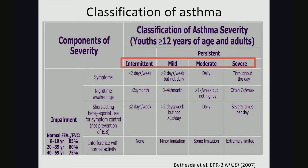Looking at the classifications of asthma, classification is mainly based on the frequency of asthma symptoms. This chart specifically focuses on classification severity in asthma patients who are greater than or equal to 12 years of age — so adolescents and adults — and is from the National Heart, Lung, and Blood Institute guidelines.